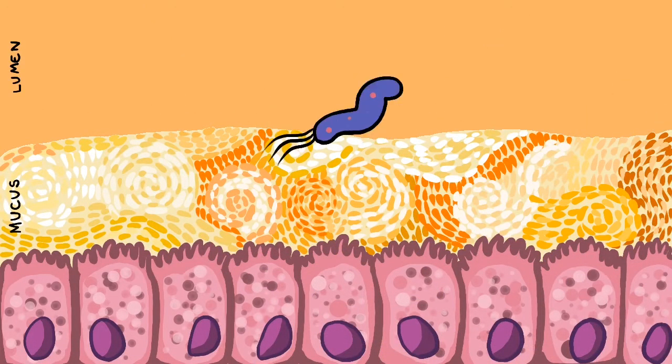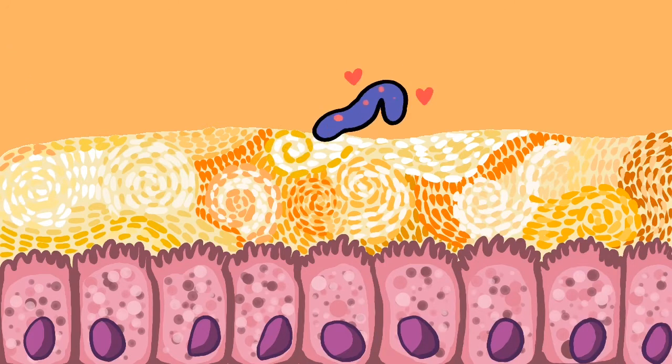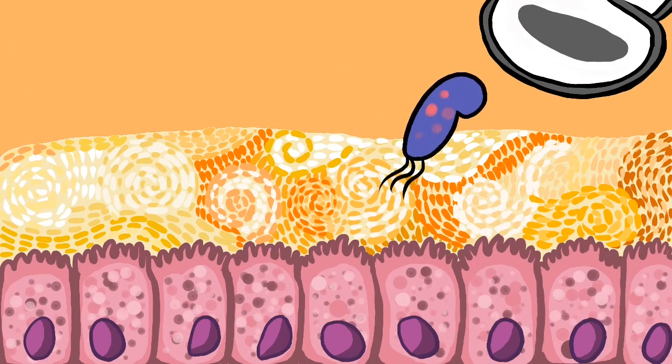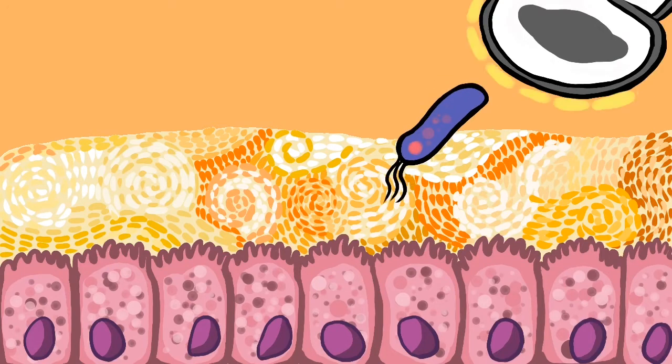This is Helen, a CAG-A-positive strain of Helicobacter pylori. She loves her new home in the bile ducts but prefers to live away from the mucus layer. However, she can't do it alone.